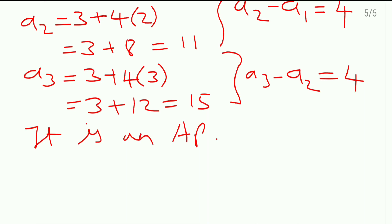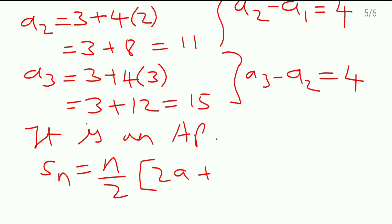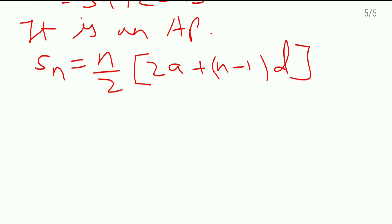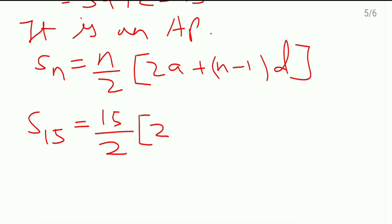Now they are telling us to find the sum of the first 15 terms. We write down the formula: sum of n terms = n/2 × [2a + (n−1)×d]. Substituting n = 15: S15 = 15/2 × [2×7 + (15−1)×4], where the first term is 7 and d = 4.